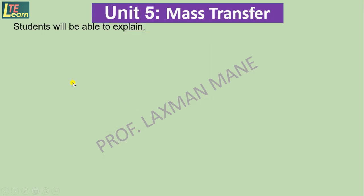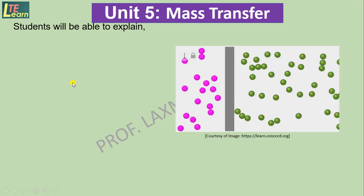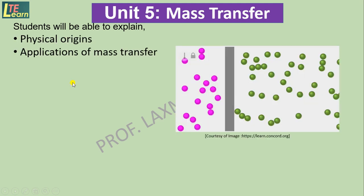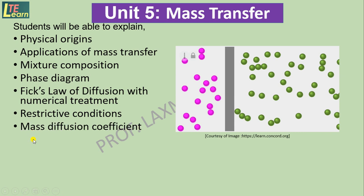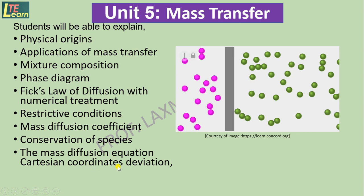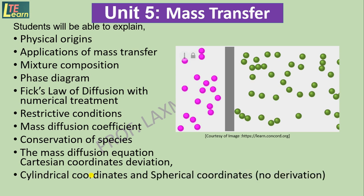Unit number five is mass transfer. In this unit it covers physical origins, applications, mixture composition, phase diagram, Fick's law of diffusion with numerical treatment, restrictive conditions of mass transfer, and mass diffusion coefficient. The mass diffusion equation is presented in Cartesian coordinates, deviation form, cylindrical coordinates and spherical coordinates, along with boundary and initial conditions.